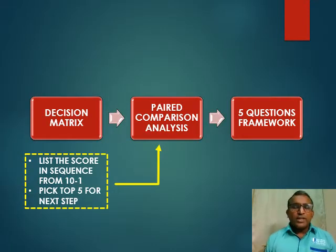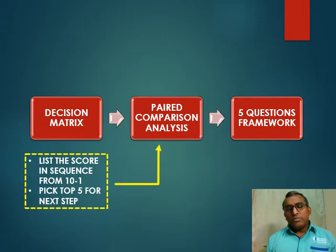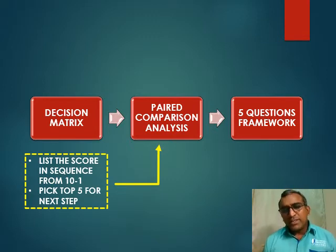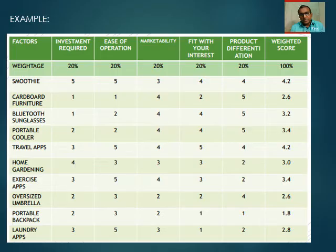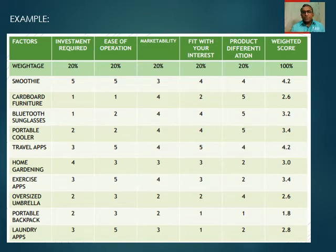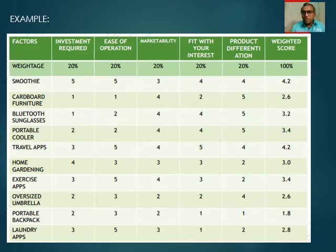The Decision Matrix Analysis will enable you, with scores and values, to narrow from 10 choices to 5, which will then enter the next step — Paired Comparison Analysis. Here, given an example of the Decision Matrix Analysis, you can see 10 ideas have been given scores, all tabulated. Based on that, we should be able to have the top 5.